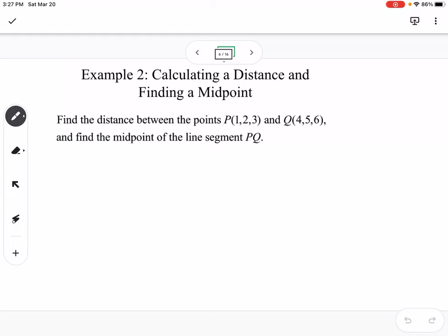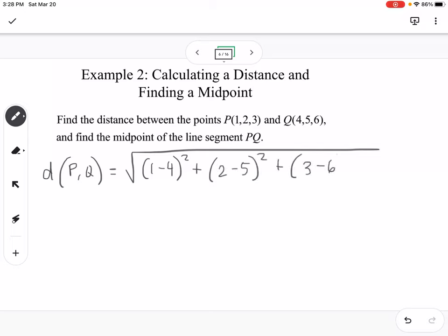So calculating a distance and midpoint. We have the point (1, 2, 3) and (4, 5, 6). To find the distance between P and Q, we're going to do (1-4)² + (2-5)² + (3-6)². That ends up being (-3)² for each of them, so 9 + 9 + 9. That would be √27, which reduces to 3√3, or if you're asked for an approximate decimal value, it's about 5.20.